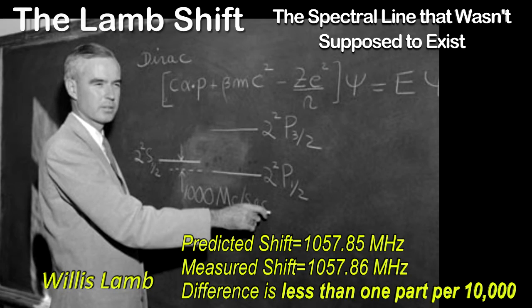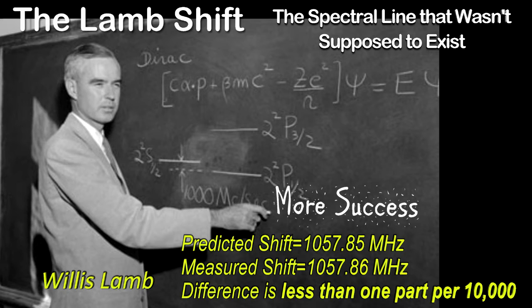There was another story that played out in the late 1940s. One of the spectral lines of hydrogen was predicted by quantum mechanics to be singular, that is, unsplit. Willis Lamb suspected that it was really two lines and did a fancy experiment that showed he was right. Using quantum field theory, theoretical physicists figured out how to calculate the amount of the splitting. Back then, the agreement between theory and experiment was about one part in a hundred. Today, the agreement is about one part in ten thousand.